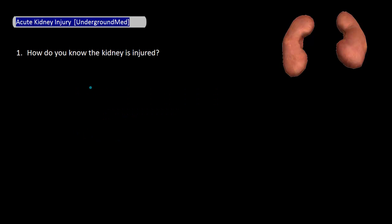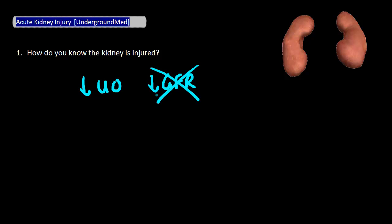How do you know the kidney is injured? What the kidney normally does is filter your blood, and so if it's injured, it can't do that as well or at all, resulting in decreased urine production and decreased GFR. However, GFR is hard to measure exactly, and so what we use instead is the serum creatinine, which isn't ideal but good enough. An increase in creatinine from baseline is what we often use to evaluate for kidney injury.